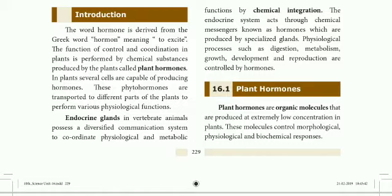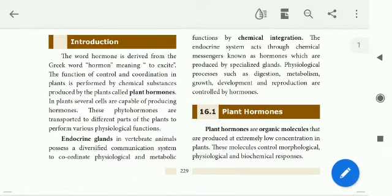The first topic is plant hormones. Plant hormones are organic molecules that are produced at extremely low concentrations in plants. The plant secretes these chemical substances in very small amounts. These molecules control morphological, physiological, and biochemical responses — they control the structure, physiological processes, and chemical processes of the plant.